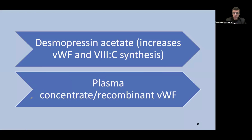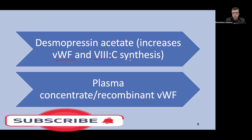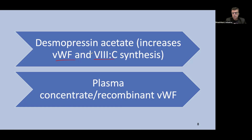Von Willebrand disease can be treated with desmopressin acetate, a synthetic analog of ADH that can increase Von Willebrand factor and Factor 8 synthesis from the endothelium. Plasma concentrate or recombinant Von Willebrand factor has also been used satisfactorily in many cases.